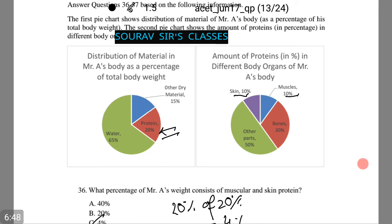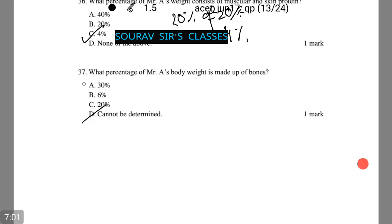Now let us check the value. The answer will be it cannot be determined, because notice only percentage or occurrence of proteins in bones is provided, but not the overall percentage of bones in the body. Thus option number D. Moving on to our last question.